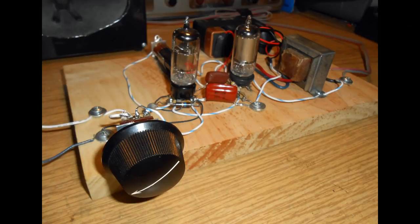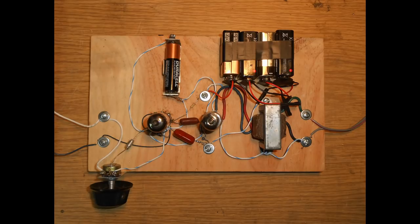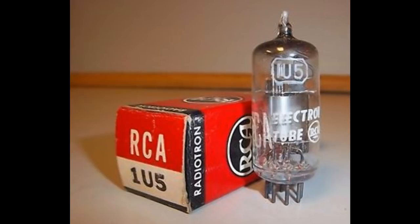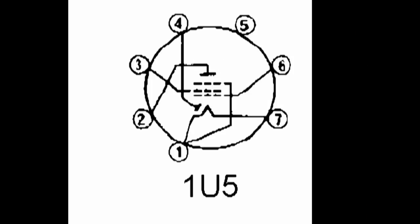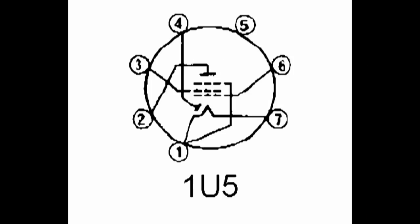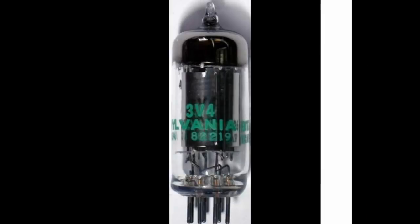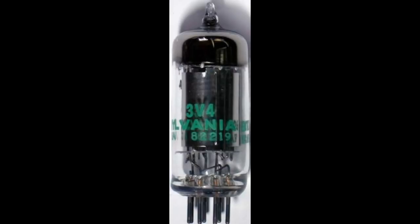We're using two tubes, the 1U5 and the 3V4. These are both battery tubes. That means they're tubes that were developed during the 40s and 50s for battery radios. Very interesting tubes that don't actually have cathodes. They're directly heated filaments. The 1U5 directly heated pentode that has a diode that's used for a detector. And the 3V4 power amplifier tube. 3V4 looks just like any power pentode, but no cathode.